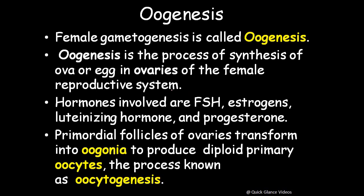Now the second type: oogenesis, which is female gametogenesis. Oogenesis is the process of synthesis of ova or eggs in the ovaries, just as spermatogenesis happens in the testes. The hormones involved in oogenesis are FSH, estrogens, luteinizing hormone, and progesterones — more hormones are involved here compared to spermatogenesis.